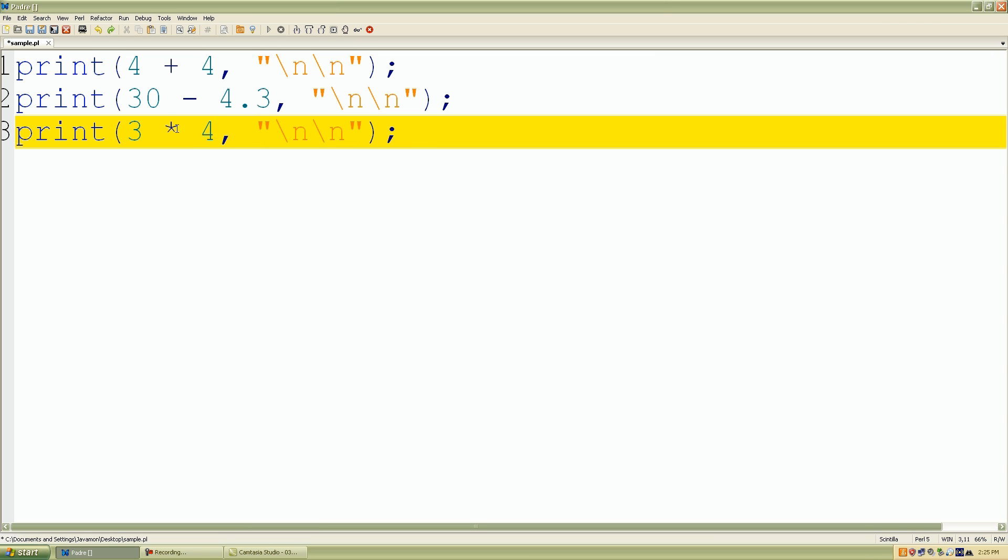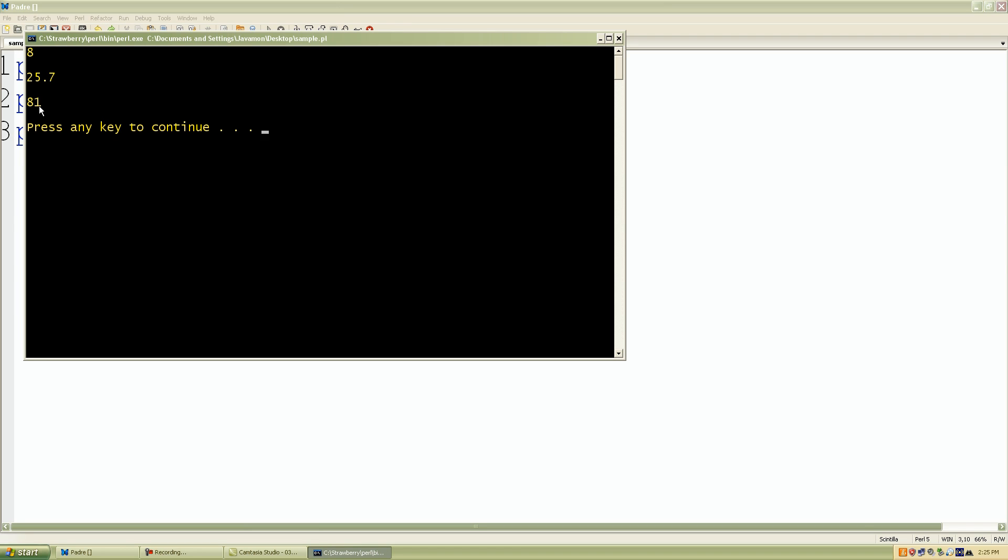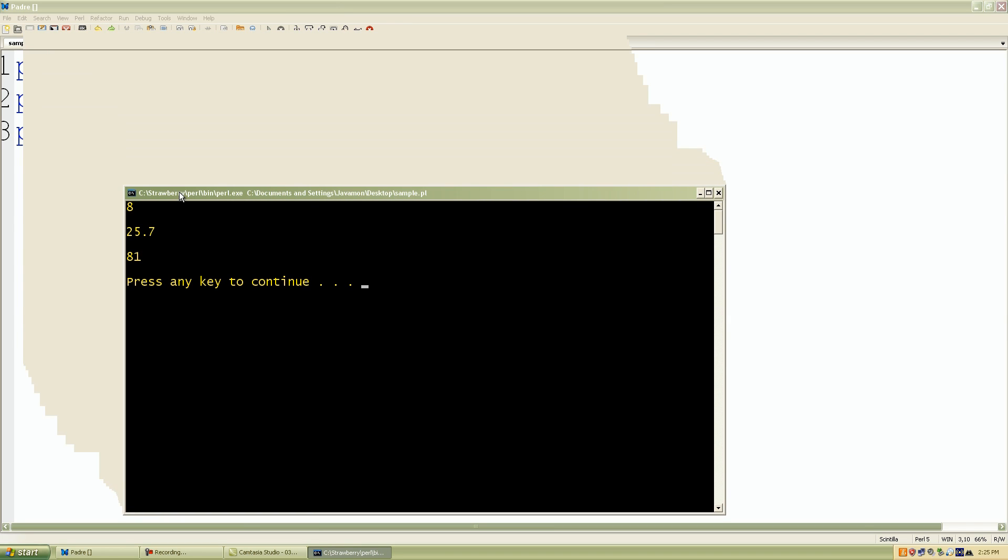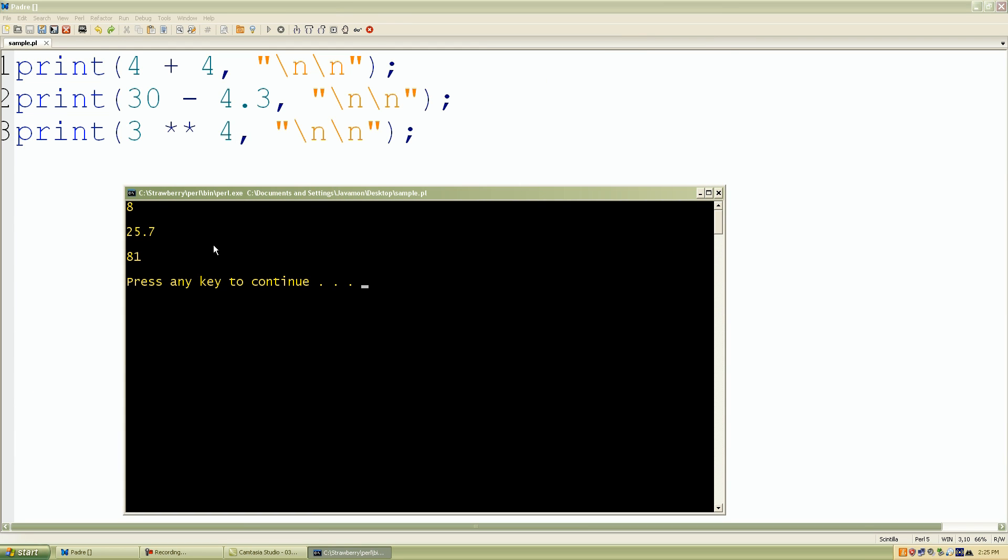And just to show you guys, we can use our power operator. So 3 to the fourth power, we run our Perl application is 81. So 3 to the fourth power is 81.